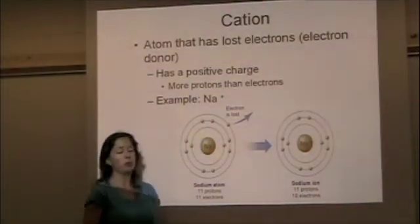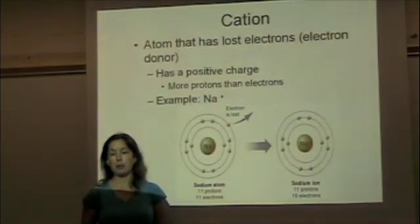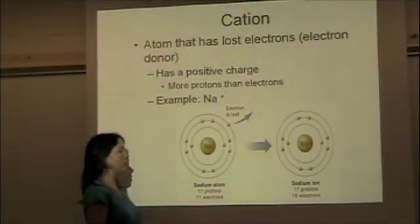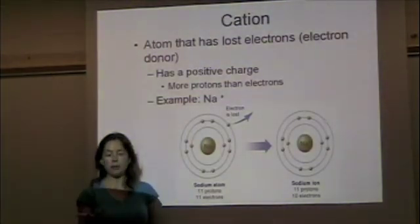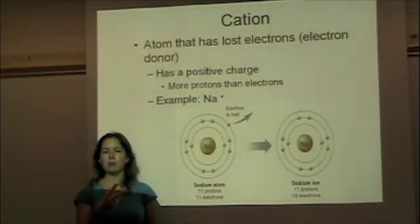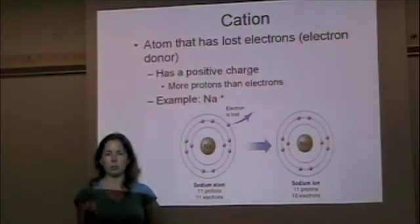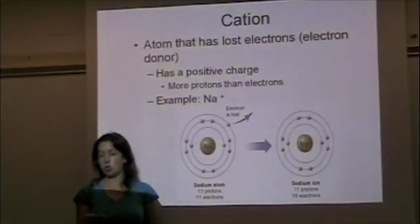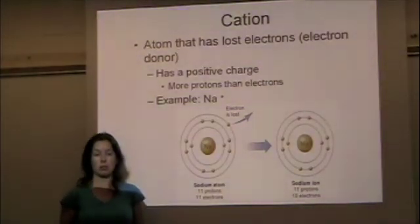Magnesium is an example of another atom that likes to lose electrons and become cations. Magnesium has 12 electrons, so it's going to lose the 2 in the outermost shell. When it loses those 2 electrons, it's still going to have 12 protons, but it's going to have a positive 2 charge with only 10 electrons.